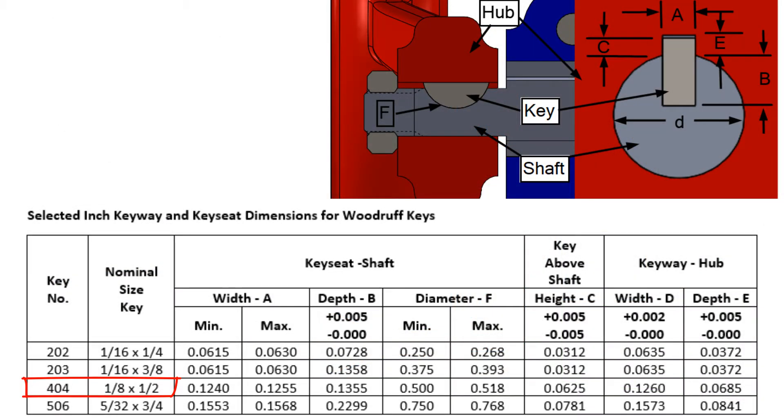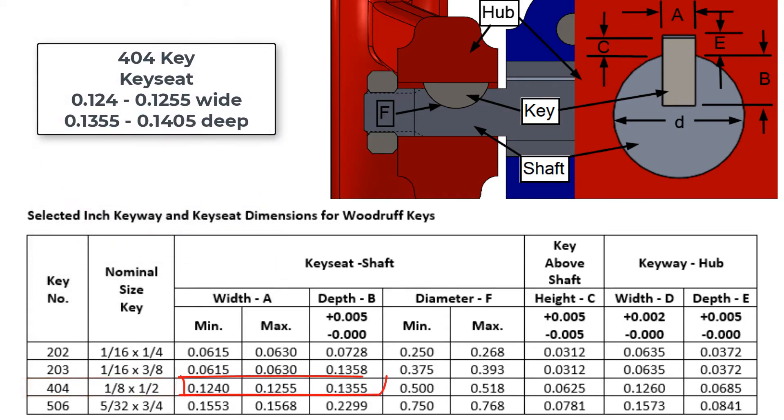If my assembly shown here required a 404 key, the nominal key width would be an eighth and the nominal key diameter would be a half inch. The key seat would be 0.124 to 0.1255 wide and the depth would be 0.1355 to 0.1405.